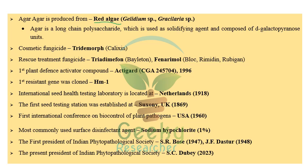Cosmetic fungicide is tridomorph — when applied on leaf surfaces it forms a layer like a cosmetic coating. Its trade name is Calyxin. Rescue treatment fungicide is triadimefon, trade name Baleton. Fenarimol is another rescue treatment fungicide with trade names Blocrimdin or Rubicon. Both triadimefon and fenarimol are rescue treatment fungicides.